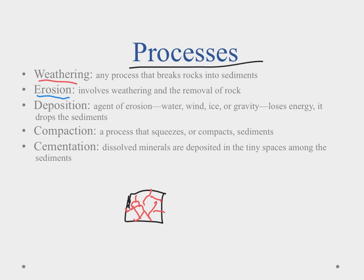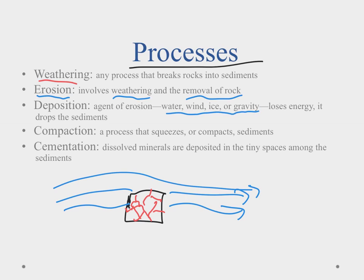Once we have this weathering then we talk about erosion. Erosion is going to be a little bit of this weathering we continue with but it's also the removal of it. Our agents of erosion are going to be water, wind, ice or gravity. Water meaning if we put it in a stream and it was flowing through that would move that rock and those little bits of sediment from one place to another.